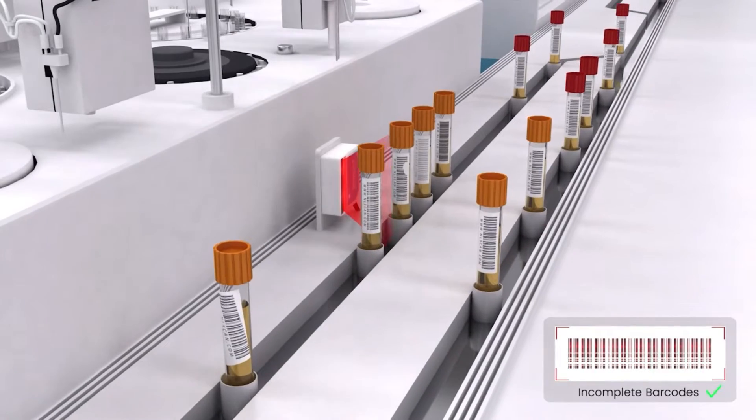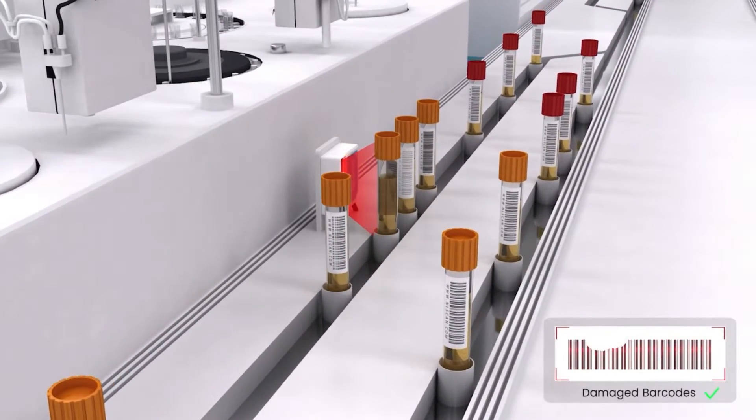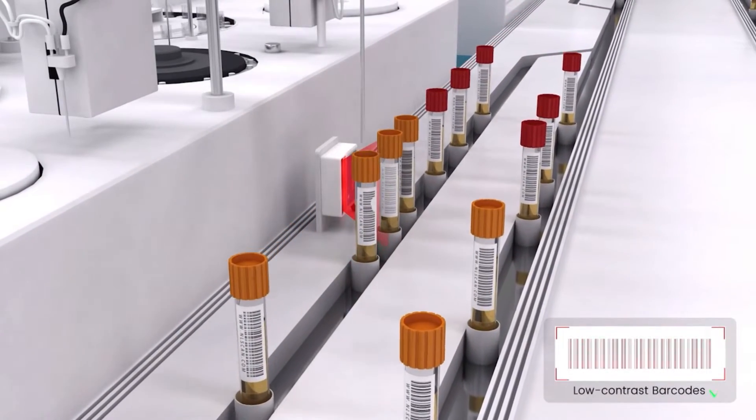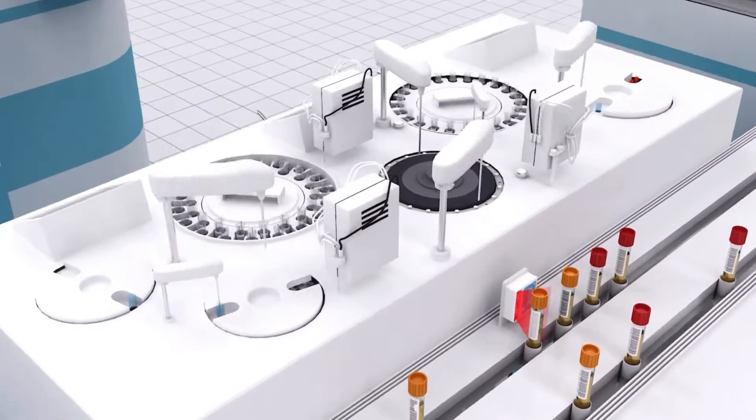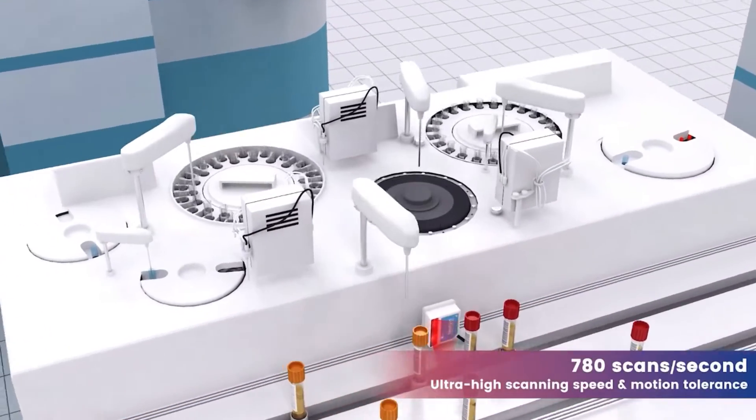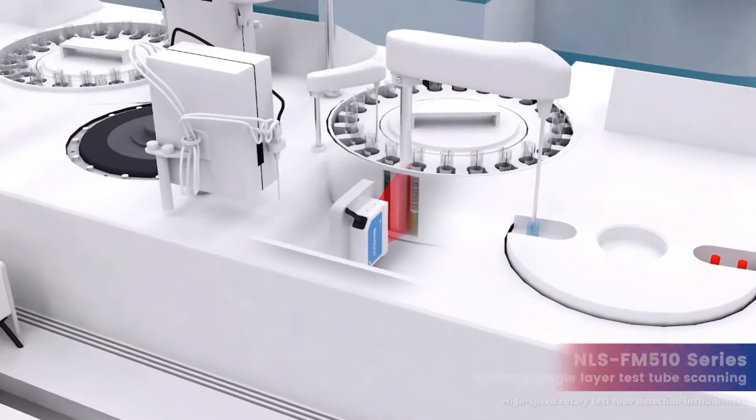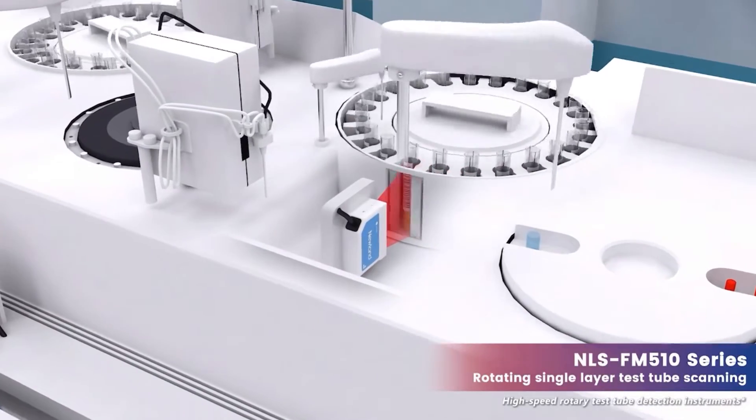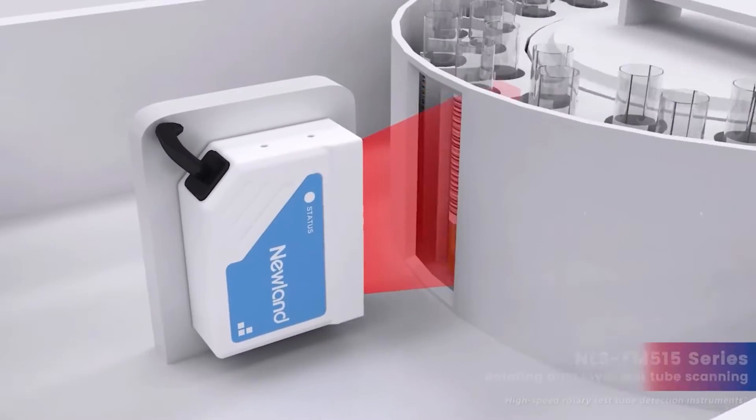Thanks to the robust decoding algorithm, the scanners avoid decoding errors or partial data capture. The decoding rate of up to 780 scans per second allows for reading fast-moving barcodes on high-speed rotary detection instruments.